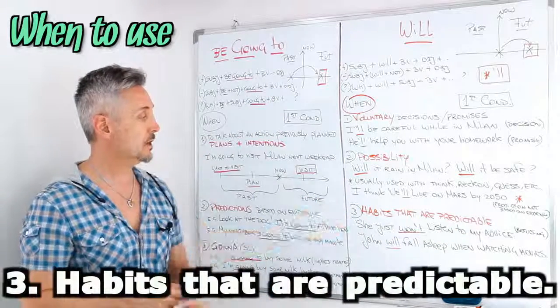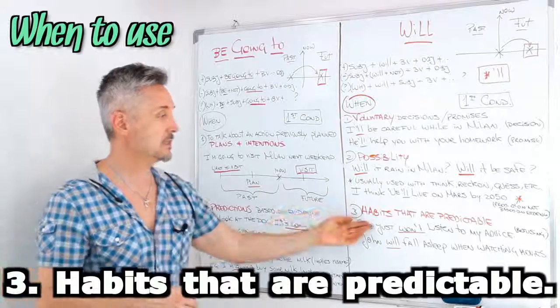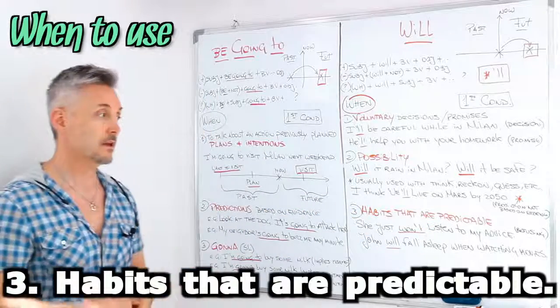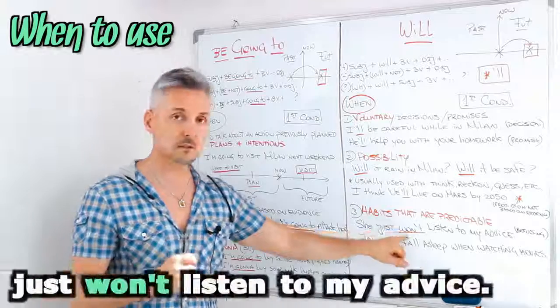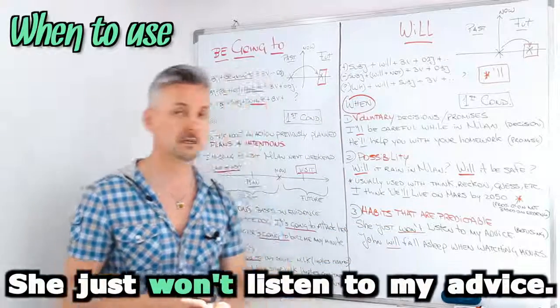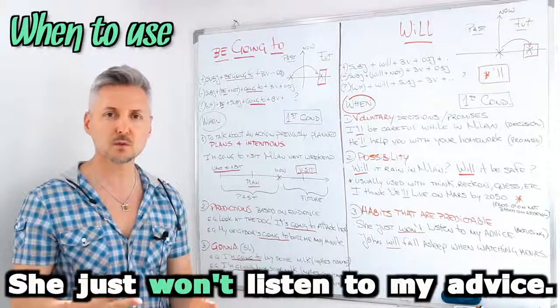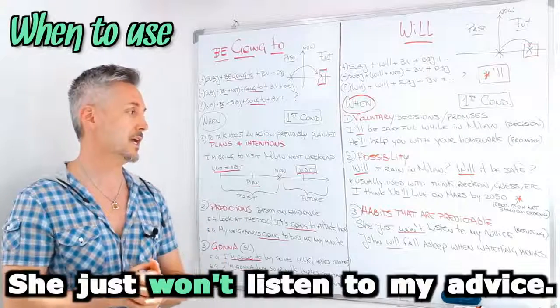Now, the third usage is for habits that are predictable. For example, she just won't listen to my advice. She just refuses to listen to my advice.